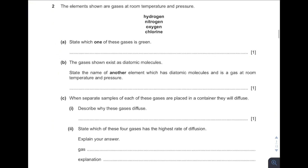Let's proceed to the next. We are given all these elements. So which one of these is green in colour? We know that it is chlorine gas. Give another element which has diatomic molecules and is a gas at room temperature and pressure. Diatomic — for example, halogens in Group 7. So other than chlorine, which one is also a gas at room temperature? It is fluorine gas.